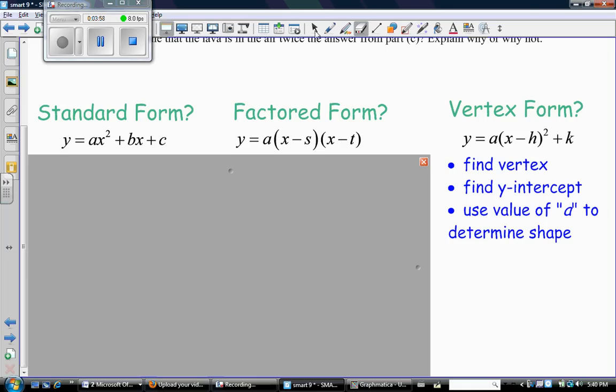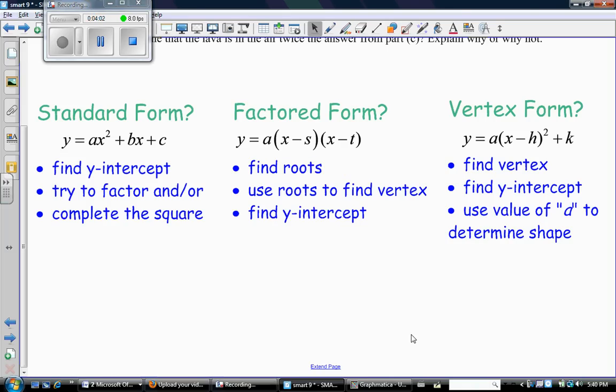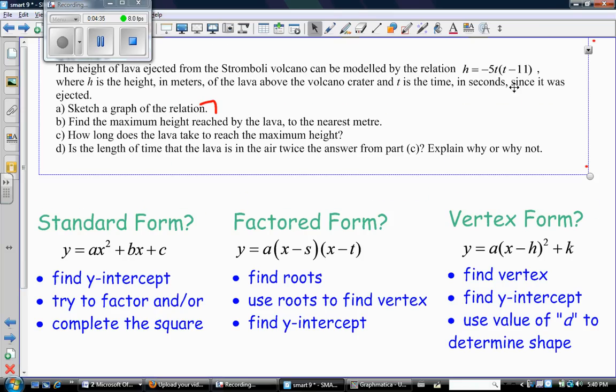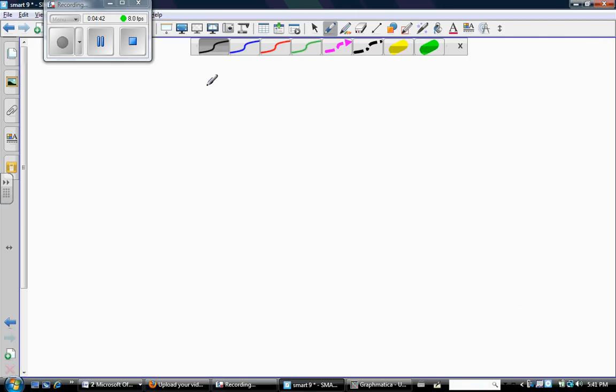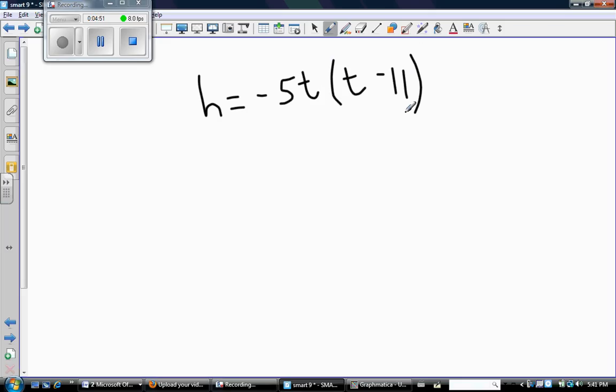But this time I have factored form, and factored form is my favorite. That's why we spend so much time teaching you how to factor properly, because factored form is the most useful of the forms of a quadratic relationship. In factored form, I can easily find the roots, use the roots to find the vertex, and of course find the y-intercept by letting x equals zero and doing the algebra properly. So that's what we're going to do in this question. Let's look at the equation again: h equals negative 5t bracket t minus 11.